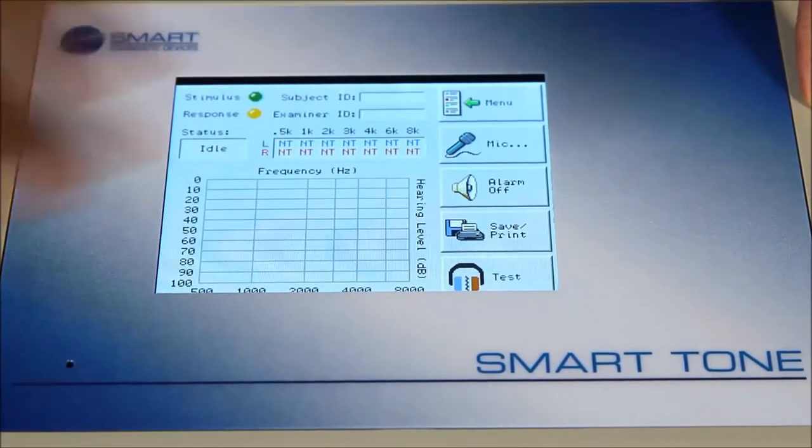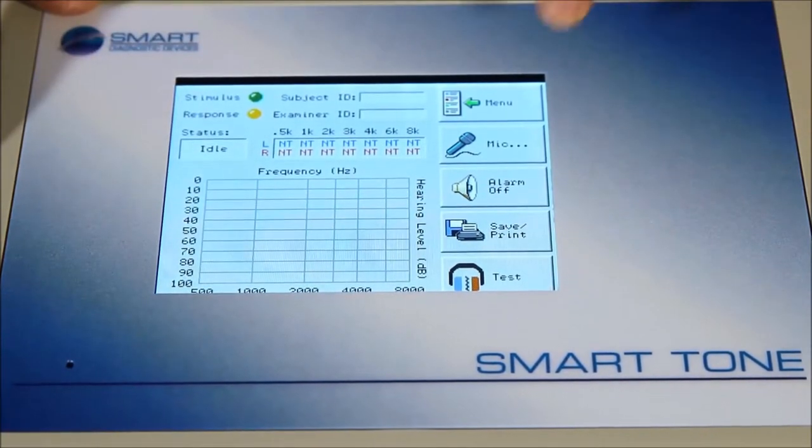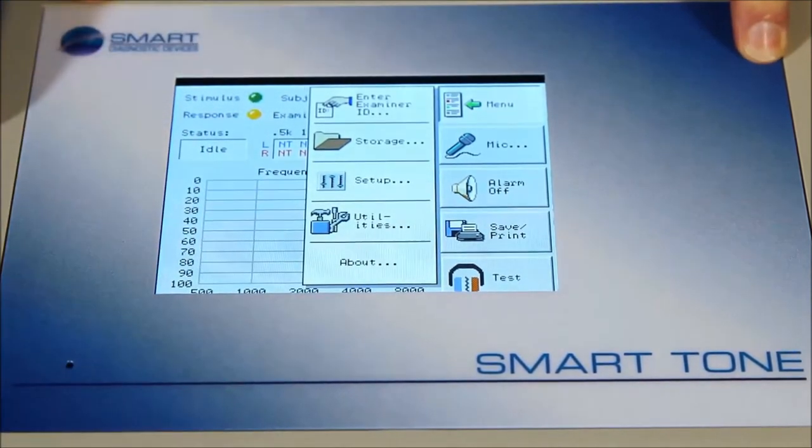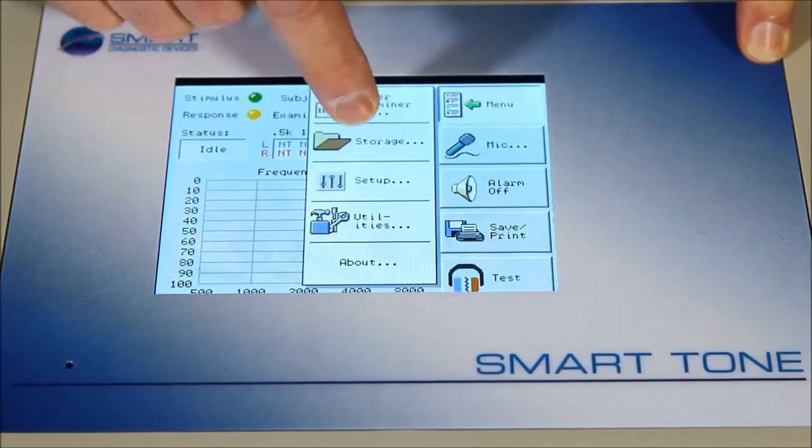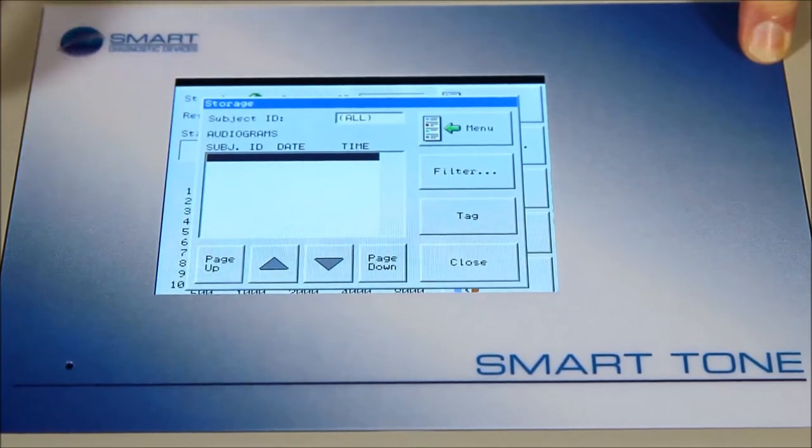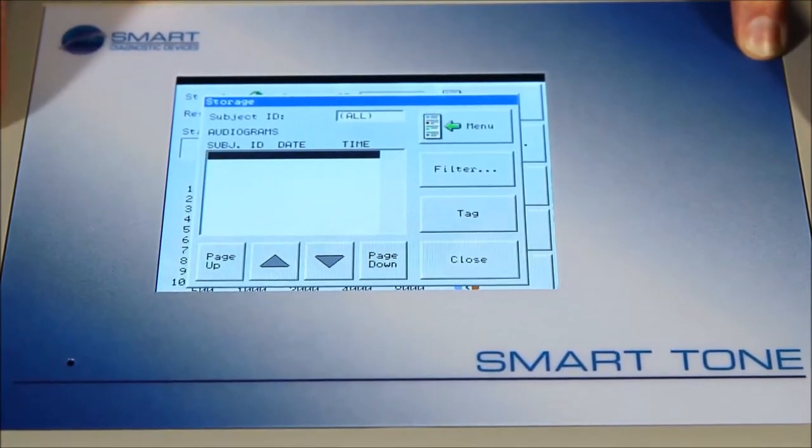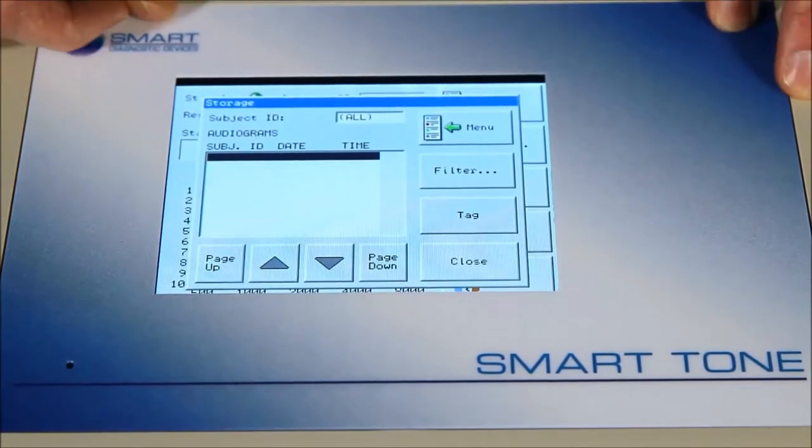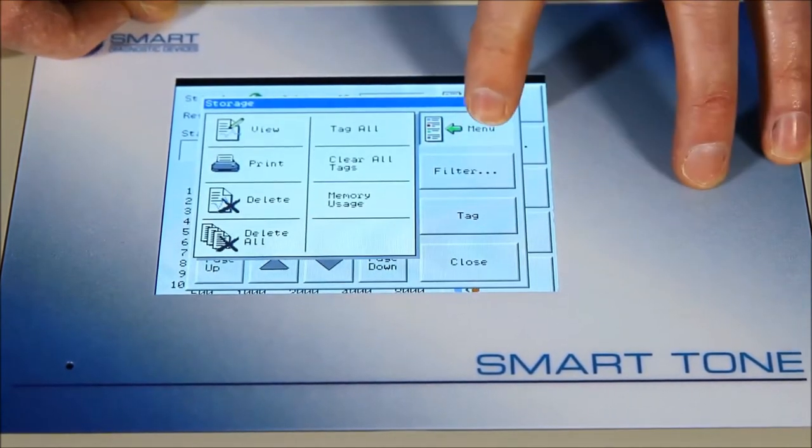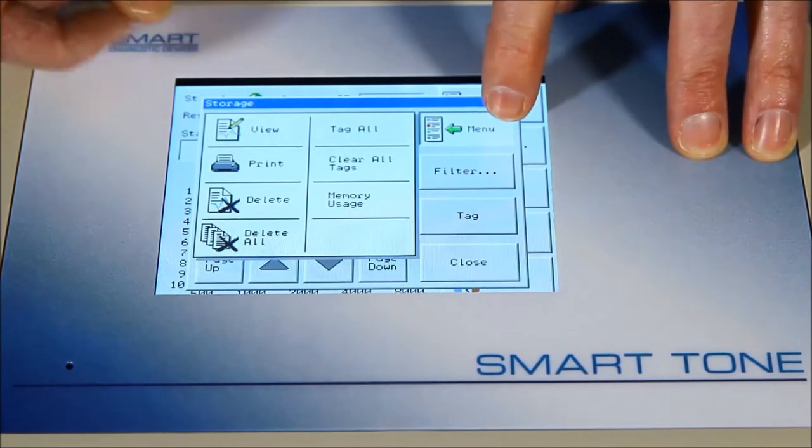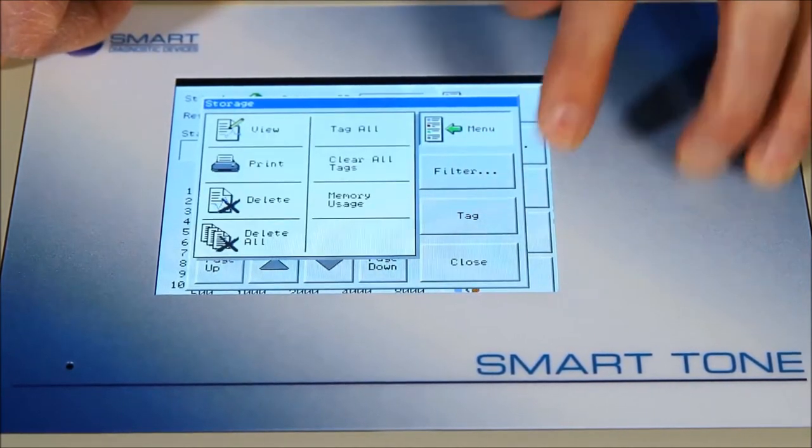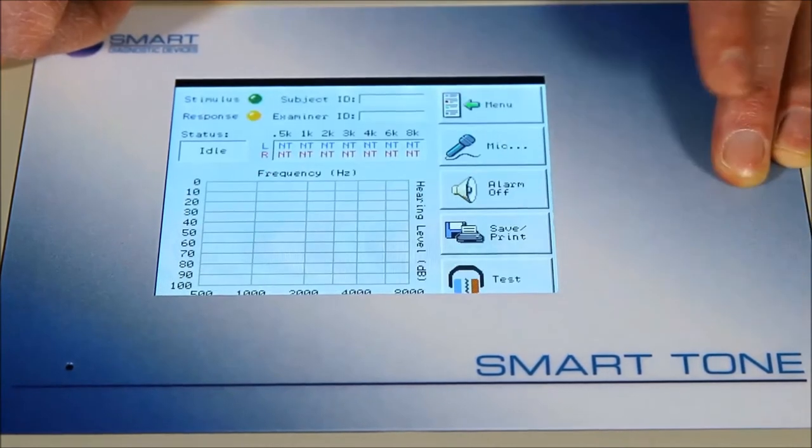I'd just like to show you the functions of the audiometer itself. Under the main menu button, there's a number of things we can set up and use. For example, your storage. Like I mentioned earlier, you can store up to 300 completed tests. If there's any tests stored in there, you can scroll through them, recall them, or delete them. I'll close that screen just so you have a look at that.